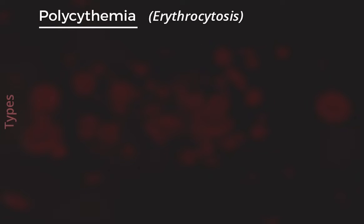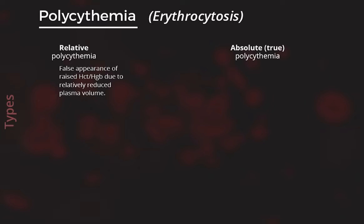We can broadly divide polycythemia into two types: relative polycythemia and absolute or true polycythemia. Relative polycythemia is not due to an actual increase in hemoglobin or hematocrit. Rather, it is the false appearance of increased hematocrit or hemoglobin because of the relative reduction of plasma volume for any reason. In acute settings, diarrhea and vomiting can cause relative polycythemia due to intravascular volume contraction or hemoconcentration. In chronic settings, this may be seen in hypertensive patients on diuretics, obese individuals, and smokers.